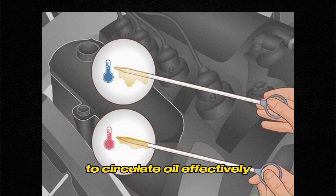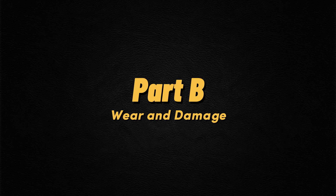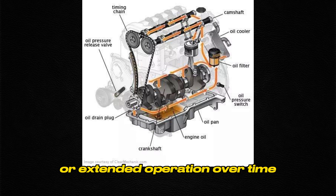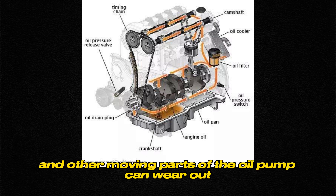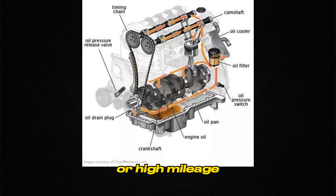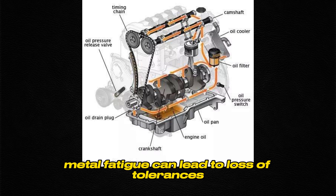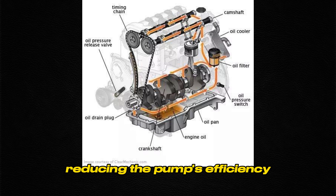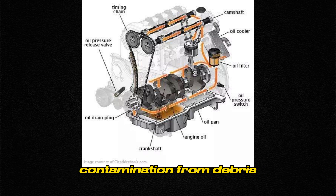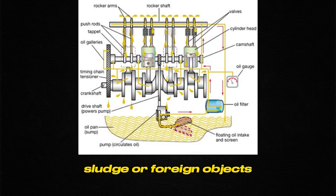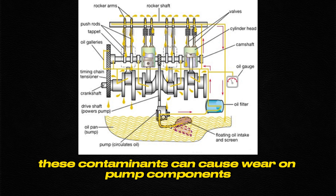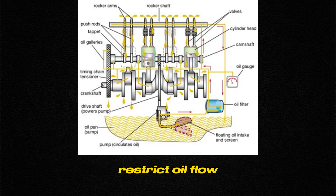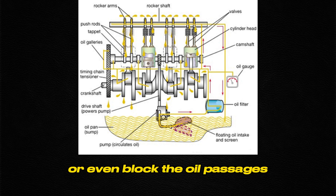Wear and damage from metal fatigue: due to excessive mileage or extended operation, the gears, vanes, and other moving parts of the oil pump can wear out. Metal fatigue can lead to loss of tolerances, reducing the pump's efficiency and eventually causing failure. Contamination from debris, sludge, or foreign objects can also enter the engine oil system, causing wear on pump components, restricting oil flow, or blocking oil passages, resulting in pump failure.